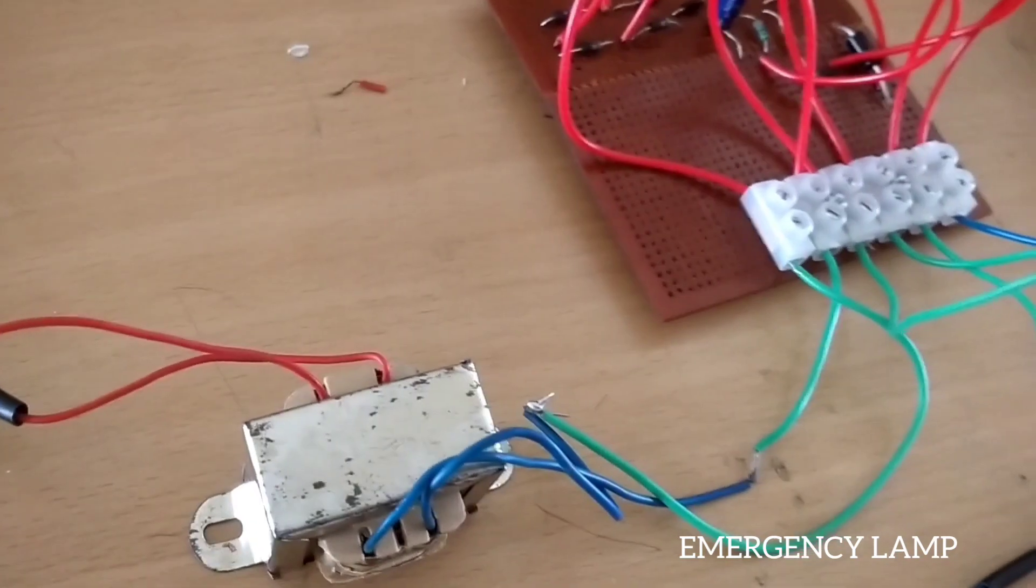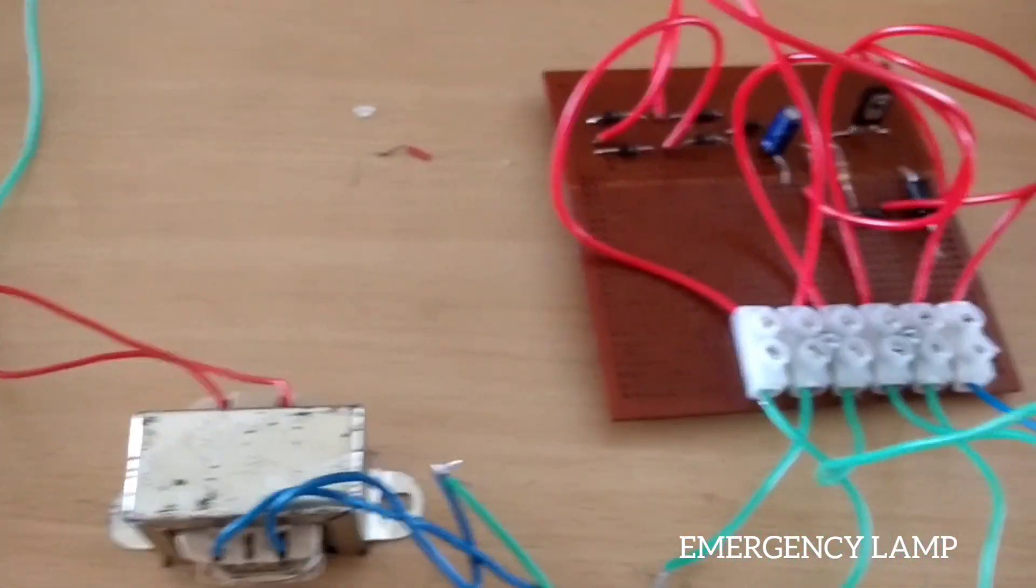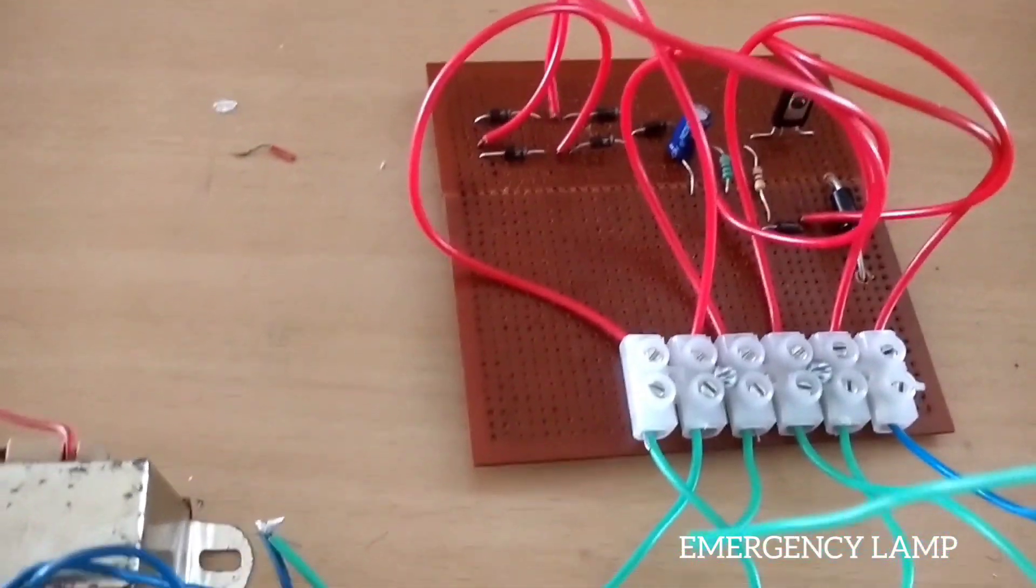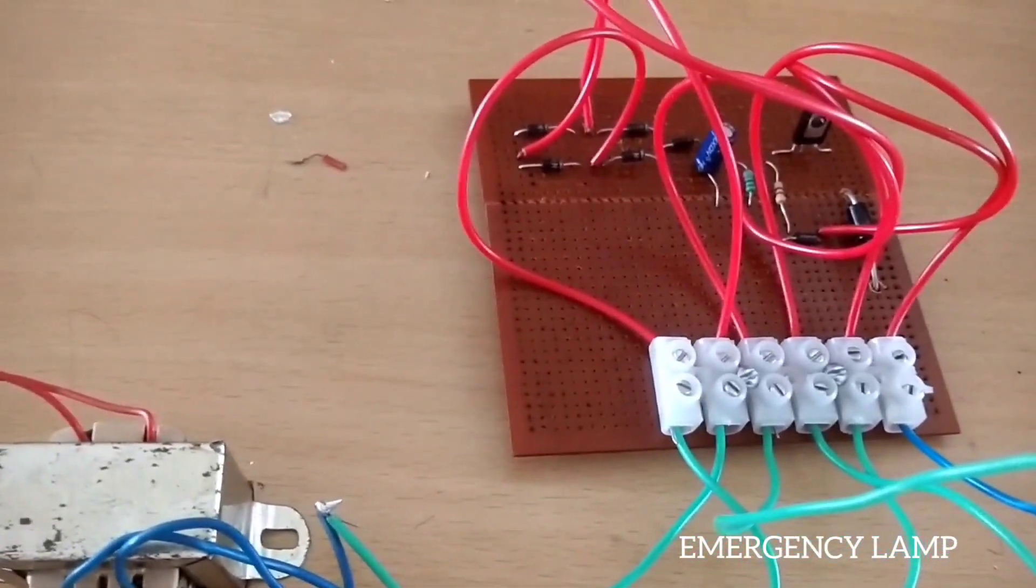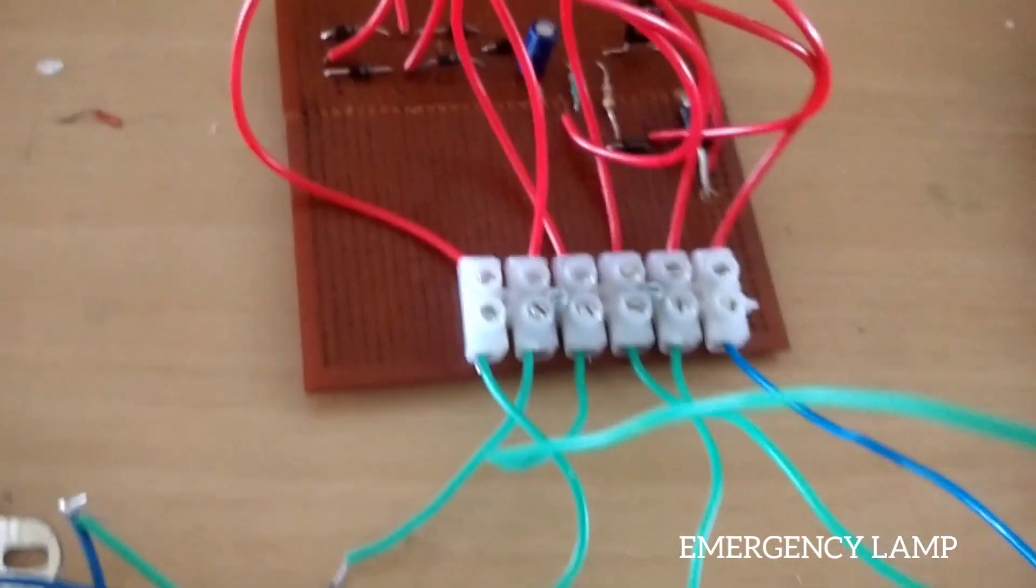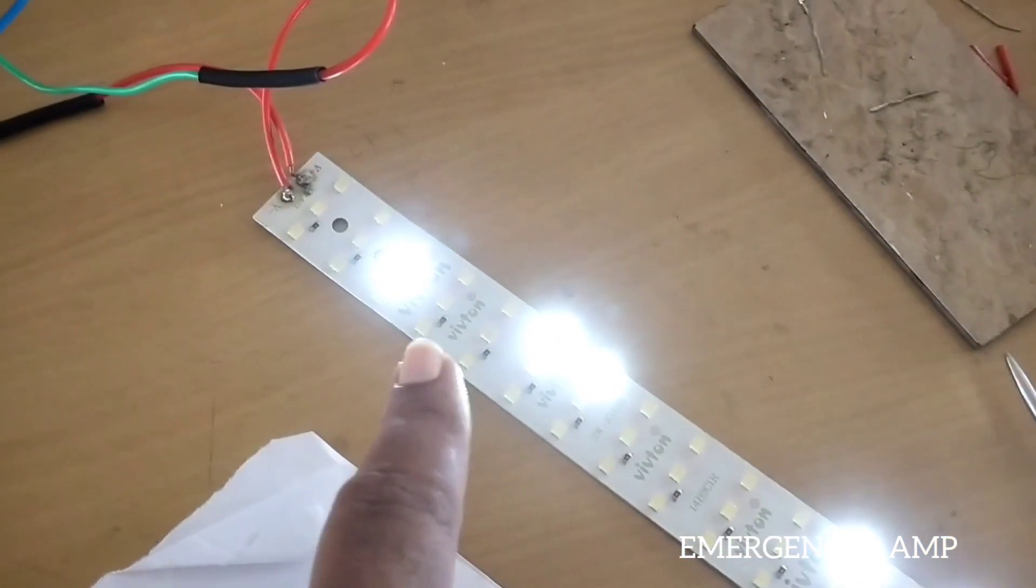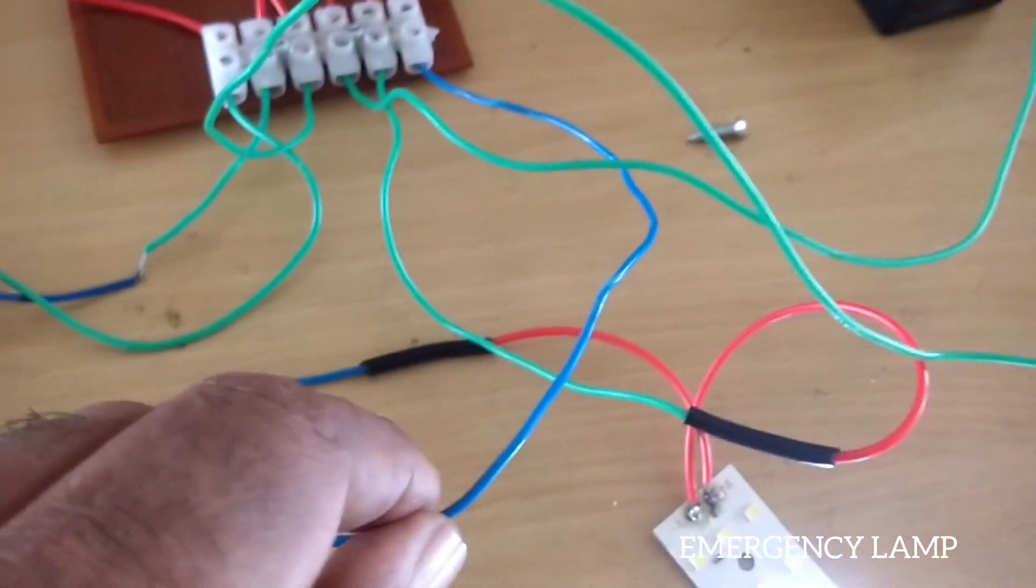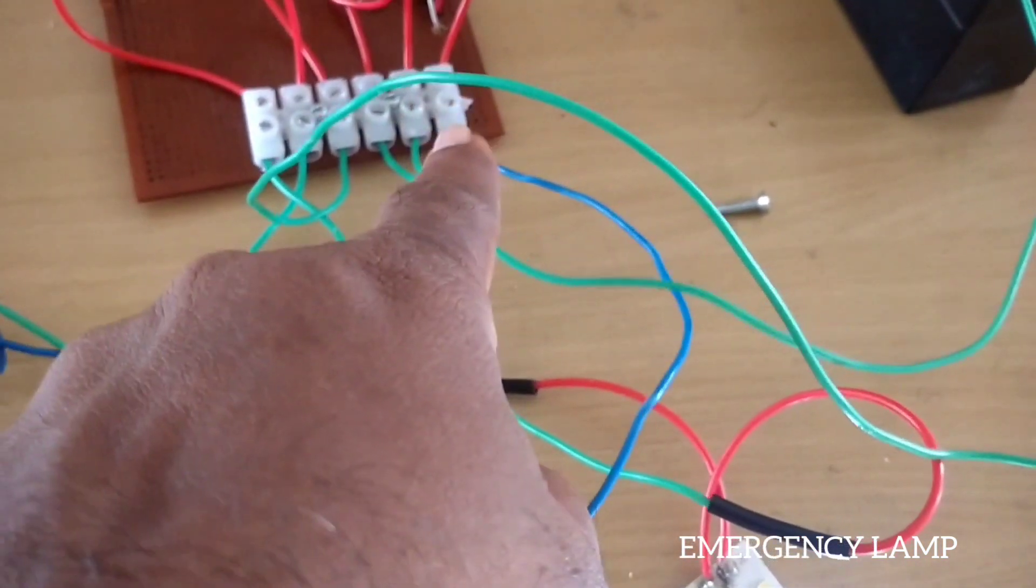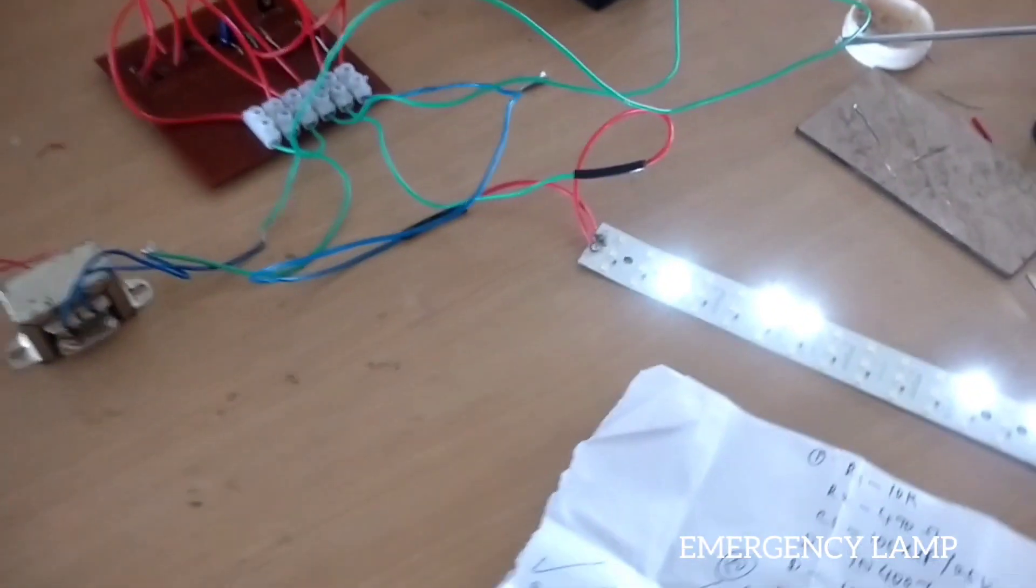See, first line is for transformer connect. It is AC transformer, so there is no polarity. And next I have connected for battery, so minus plus I have connected. And also next for the LED strip, so the blue color indicates the plus and the green color indicates the minus. So you can see the emergency light.